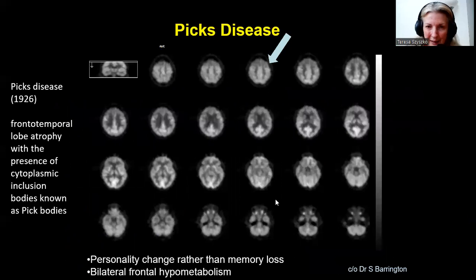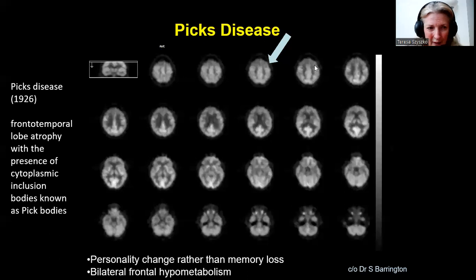Pick's disease is an example of frontotemporal dementia, predominantly frontal, and gives you personality change rather than memory loss. There is hypometabolism anteriorly in the frontal lobe. This disease was first described in 1926 by Dr. Pick, and you've got atrophy with the presence of cytoplasmic inclusion bodies.